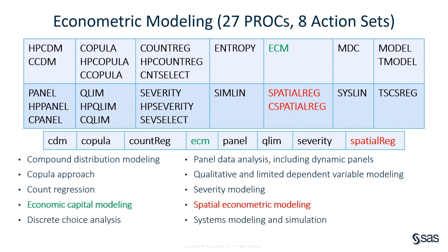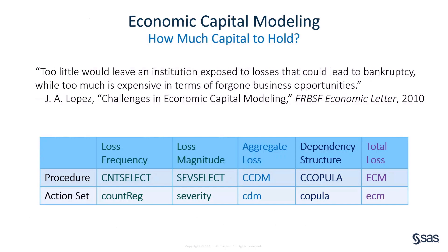In this video, I focus on two topics: economic capital modeling and spatial econometric modeling. A company might have many business lines or risk categories. Each business line might experience some losses, and the company has to hold some capital as a buffer. But how much capital should it hold? If it holds too little, it might have a high risk of bankruptcy. But if it holds too much, it might miss important business opportunities. To determine how much capital to hold, it's critical to correctly model the distribution of the total loss, which is the sum of losses from all business lines or risk categories. It's a difficult task, but SAS Econometrics has a series of tools to help you do it.